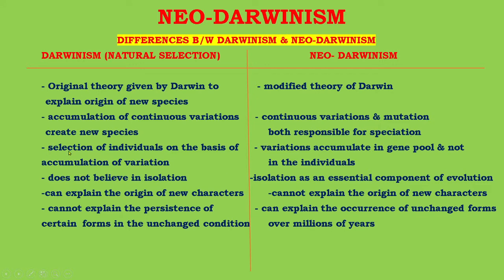According to the old theory of Darwin, selection operates on individuals on the basis of accumulation of variations; but according to Neo-Darwinism, variations accumulate in the gene pool and not in the individual. The old theory does not believe in isolation, but Neo-Darwinism states that isolation is an essential component of evolution. Neo-Darwinism can also explain the occurrence of unchanged forms over millions of years.